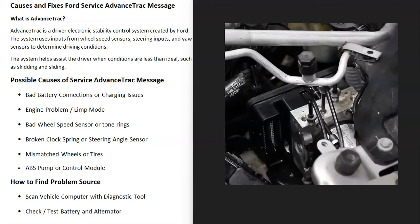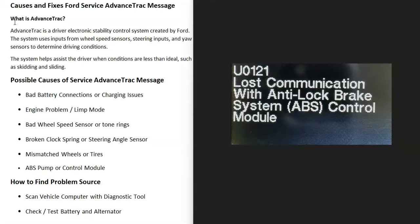The last thing on this list is the ABS pump or the ABS control module, located up inside the engine compartment. The ABS pump will have a bunch of lines going to it, with a control module bolted onto it. If there's an issue with one of these, it can trigger that service AdvancedTrac message. If this is the issue, you'll get a code — for example, U0121, which means lost communication with the ABS control module. You'd need to check and test it to confirm the problem.